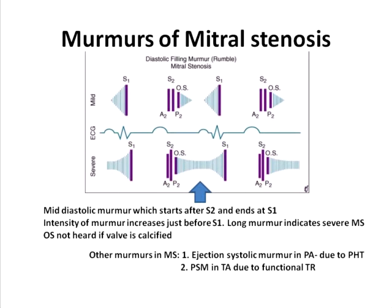Other murmurs in mitral stenosis include an ejection systolic murmur in the pulmonary area due to pulmonary hypertension, and a pansystolic murmur in the tricuspid area due to functional tricuspid regurgitation, which occurs as a consequence of right ventricular hypertrophy.